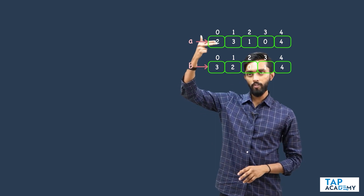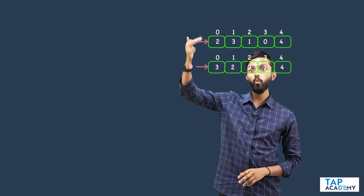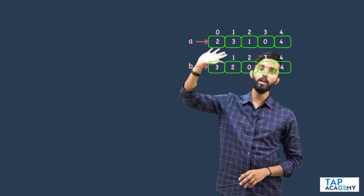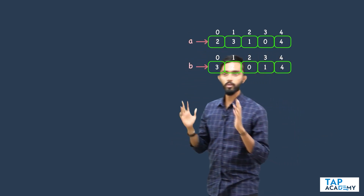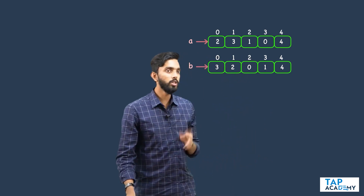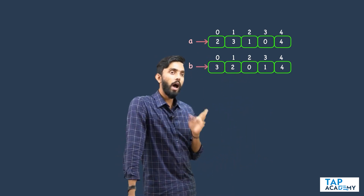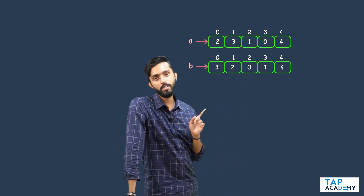So whatever is the value becomes the index, and whatever is the index becomes the value. Now how do you write code for this? Very simple — I will run a loop on my array.